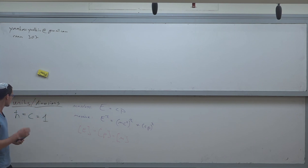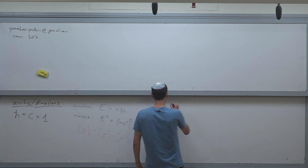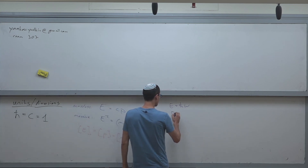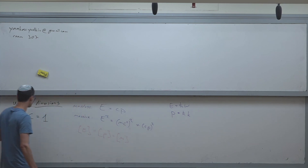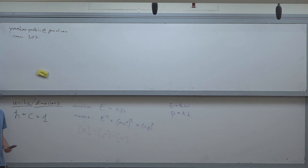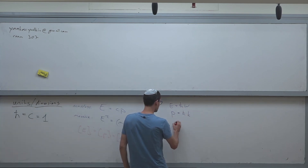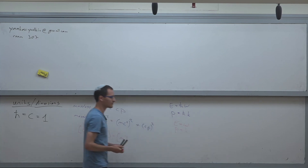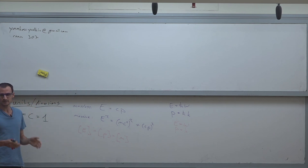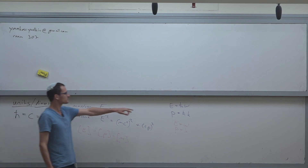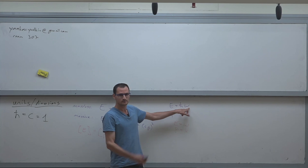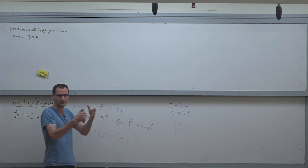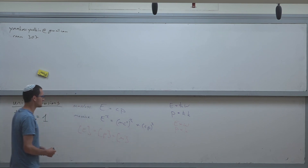The same thing goes for ℏ. In quantum mechanics, energy equals ℏ times omega — omega being the angular frequency — and momentum equals ℏ times k. If you use the convention that ℏ equals 1, then energy and frequency are exactly the same thing, and the same goes for momentum and wave number. So from now on, frequency and energy are the same thing. ℏ is just the number used to convert from radians per second to joules, but if you care only about the actual number, they're exactly the same.